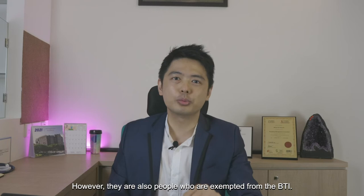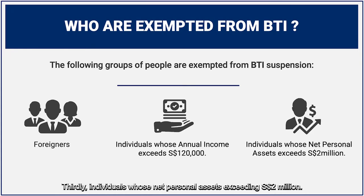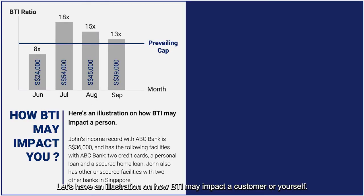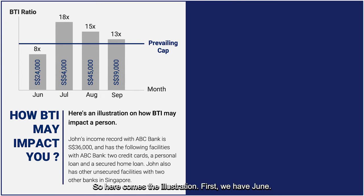However, there are also people who are exempted from BTI. First, foreigners. Second, individuals whose annual income exceeds $120,000 Singapore dollars. Third, individuals who have net personal assets exceeding $2 million. Now let's have an illustration of how BTI may impact a customer. John's income record with ABC Bank is $36,000 and he has two credit cards, a personal loan, a secured home loan with ABC Bank, and also other credit facilities with two other banks in Singapore.